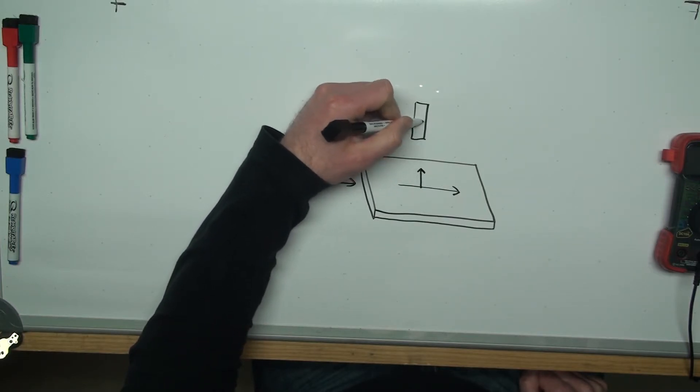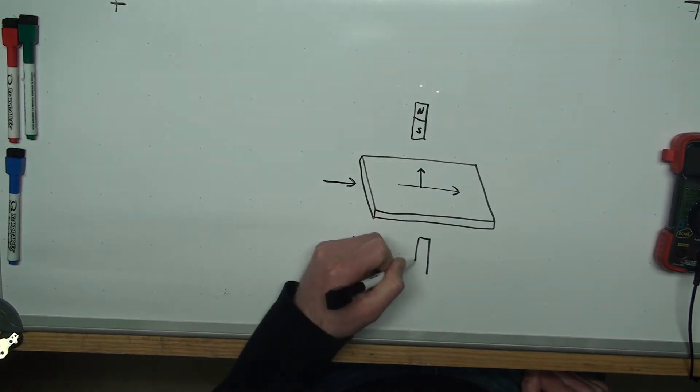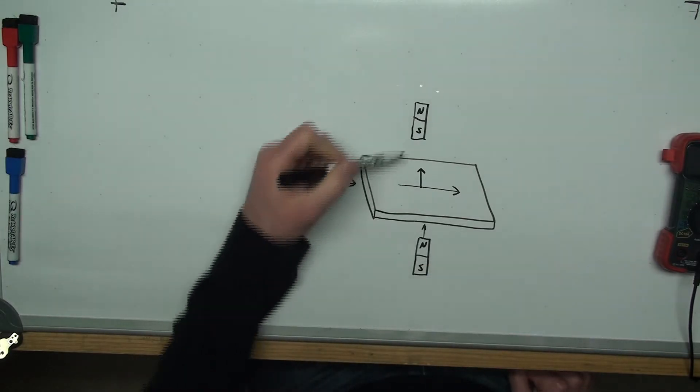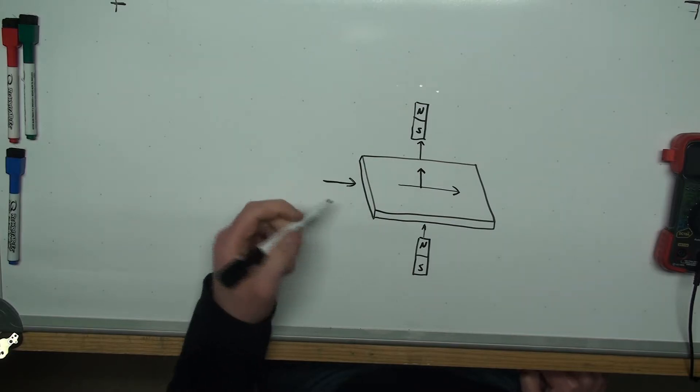There's another bar magnet down here, north and south. They don't have to be bar magnets, but this gives you an idea of where the magnetic field is protruding through the plane of the conductor.